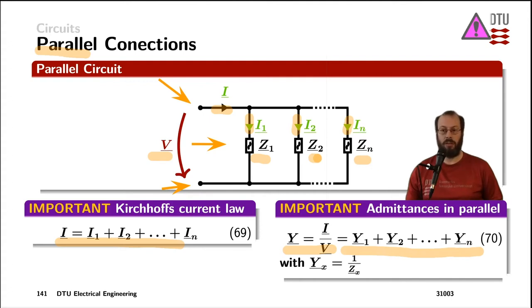This equals the sum of the admittances of the individual impedances, where the admittance of each individual component is one over the impedance of that one. Now it's all about applying what we've learned in the next eight exercises.